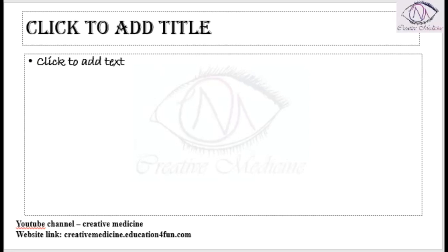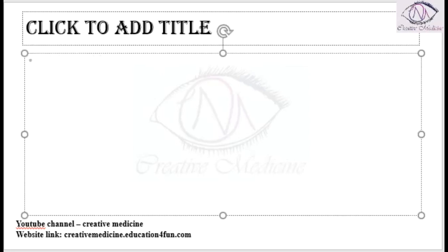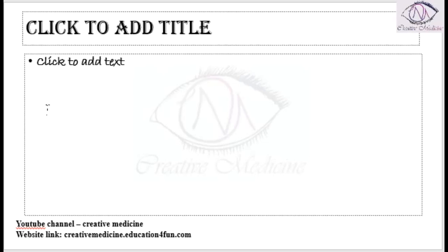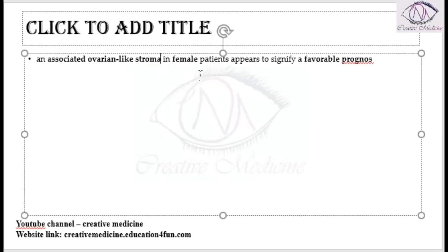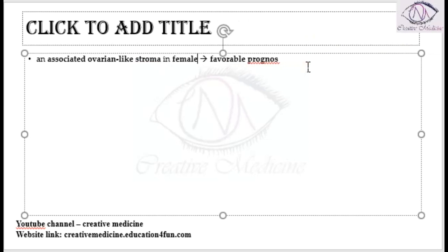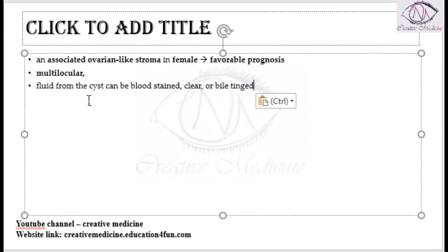In the pathology, if patients have biliary cystadenocarcinoma along with an associated ovarian-like stroma, and if this ovarian-like stroma is seen in female patients, then it signifies poorer prognosis. This cystadenocarcinoma is actually a multilocular tumor, and the fluid present in the cystadenocarcinoma can be blood-tinged, clear, or bile-tinged.